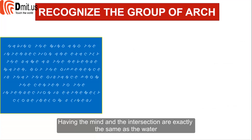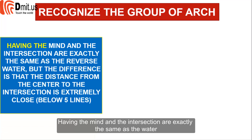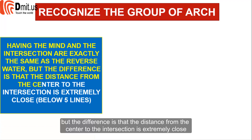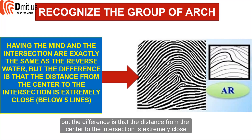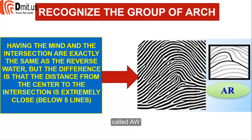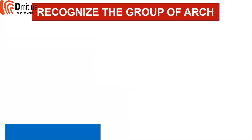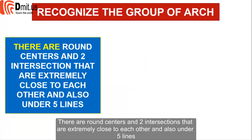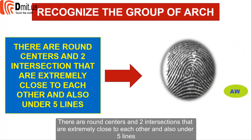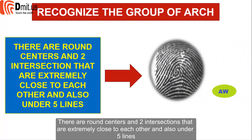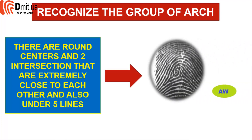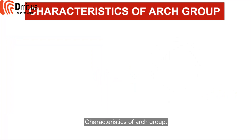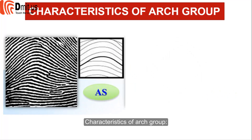Having a center and intersection exactly the same as the reverse water pattern, but the difference is that the distance from the center to the intersection is extremely close, below 5 lines — this is called R. There are round centers and two intersections that are extremely close to each other, also under five lines. This is called AW.